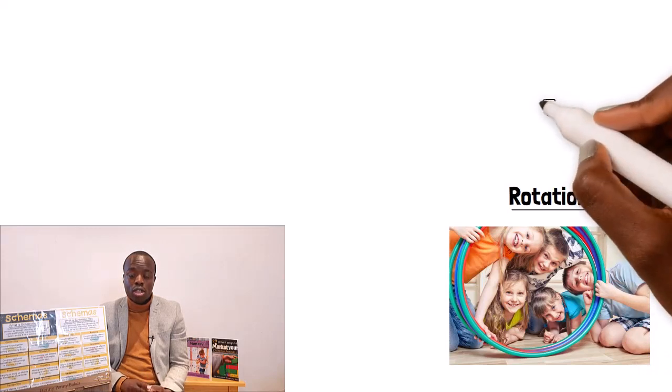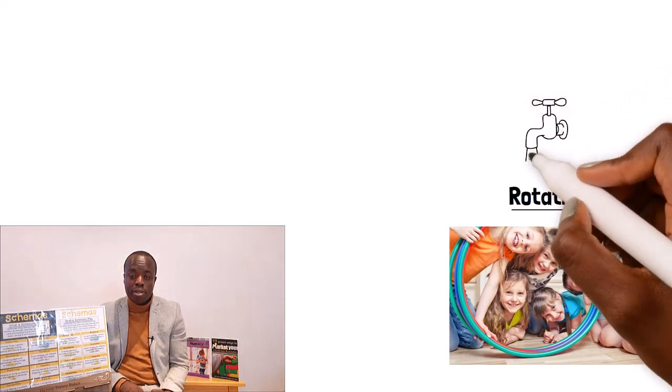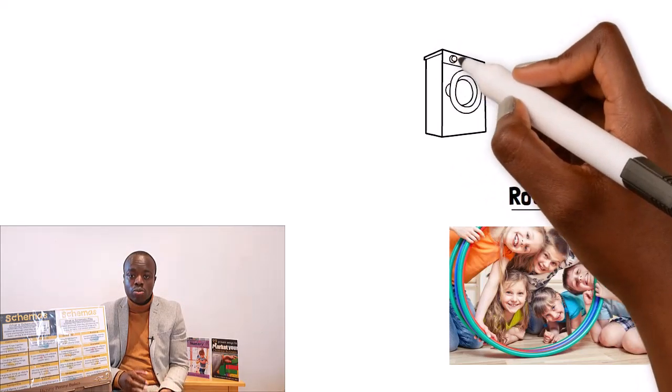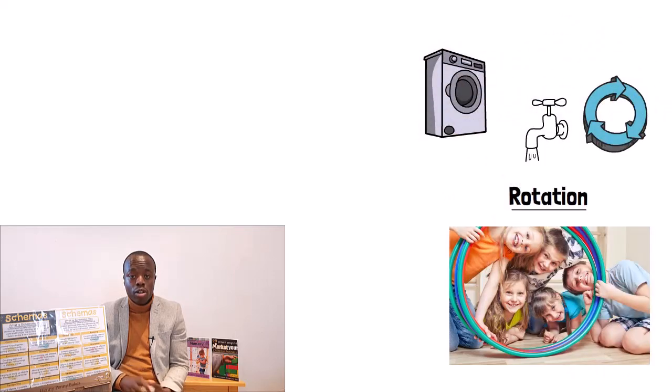You might find that your child enjoys turning on and off taps, winding and unwinding strings or playing with hoops. In your home, you might find that your child enjoys watching your washing machine spin or rolling on the floor. Providing resources that roll like wheels and lids will all help support this schema.